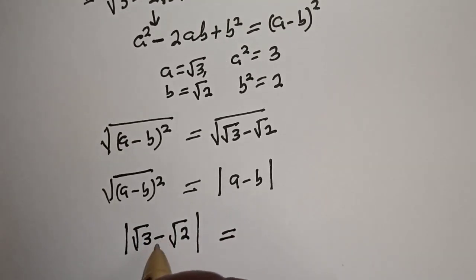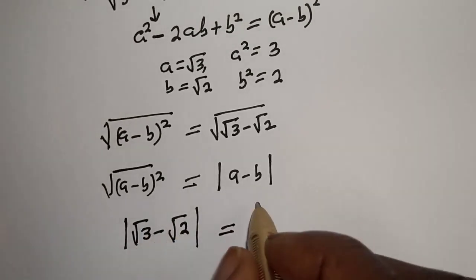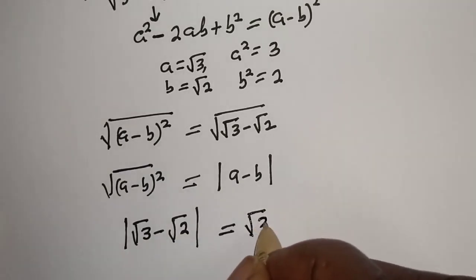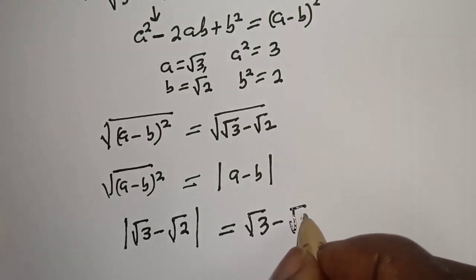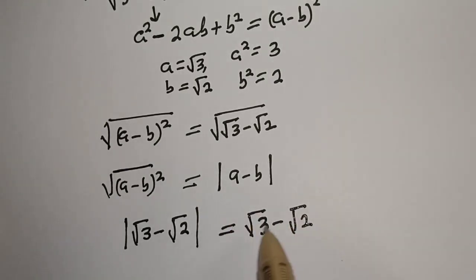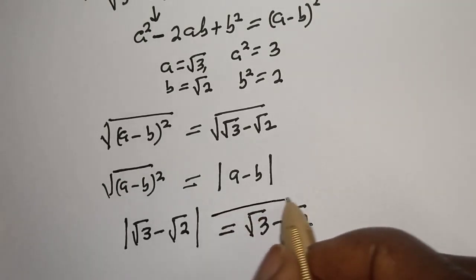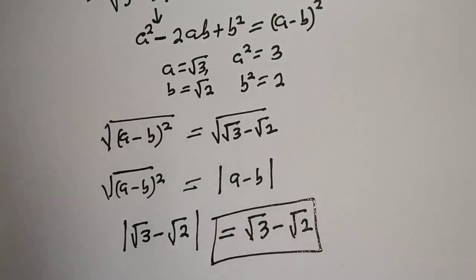This is equal to, because this is greater than this, we have root 3 minus root 2 because our answer must be positive and this is the final answer.